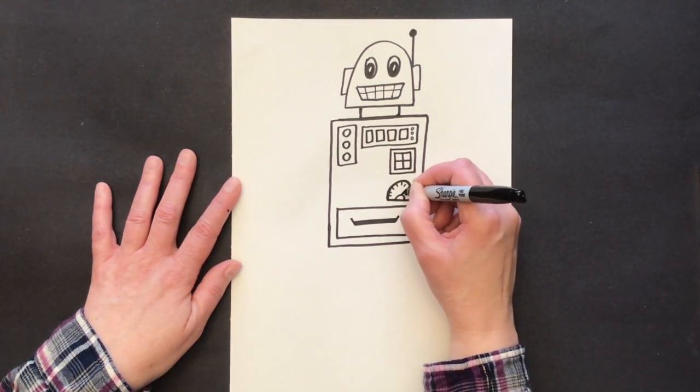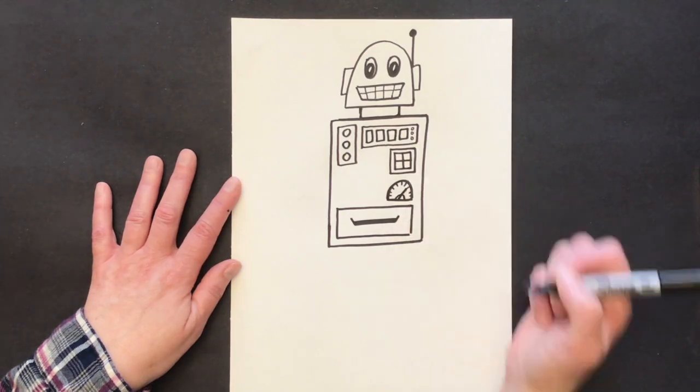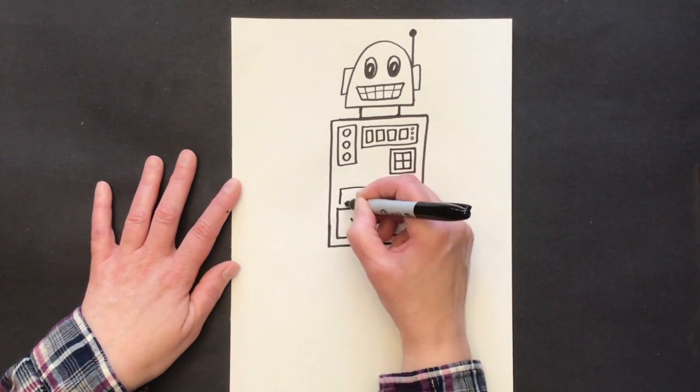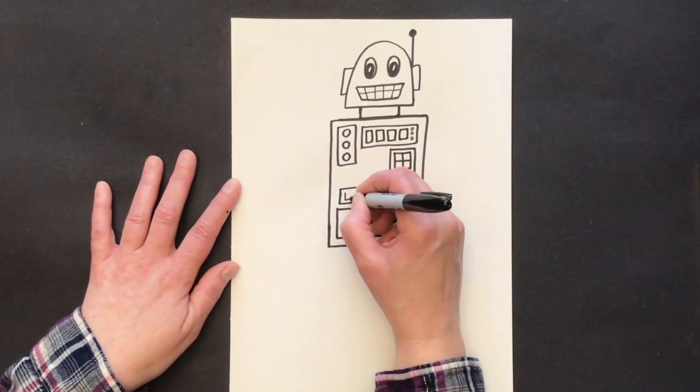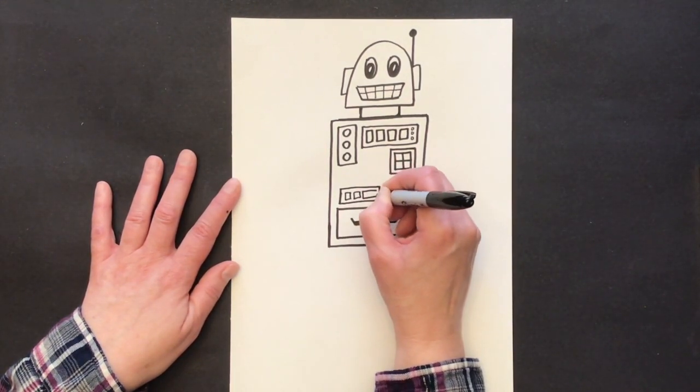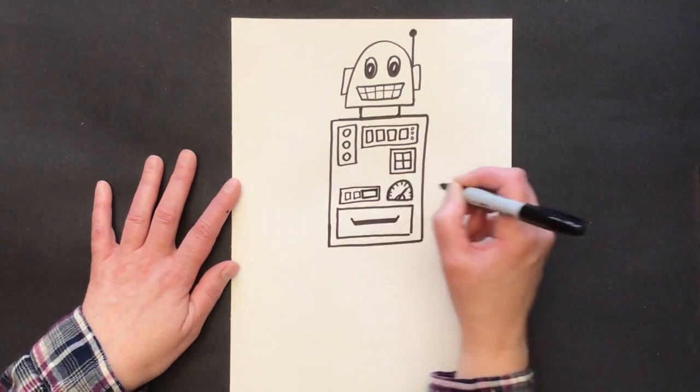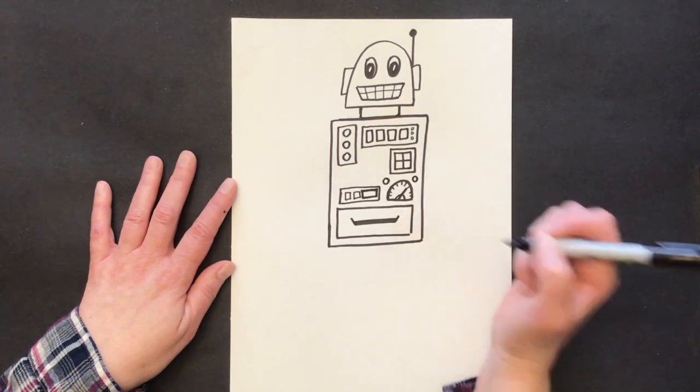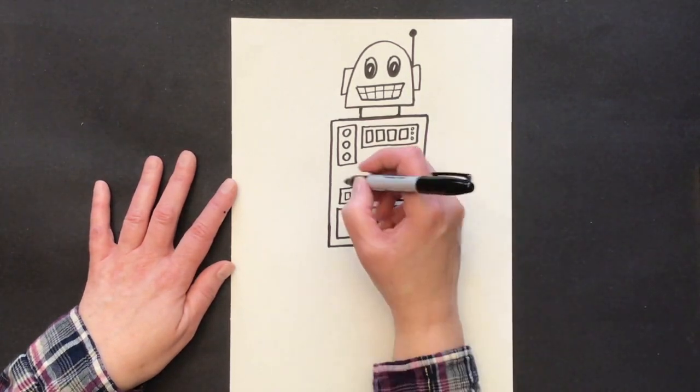And I want to put a timer in. I'm going to do a rectangle over here with some buttons for my timer. And a little light to show that the oven is on and another light to blink when it's ready.